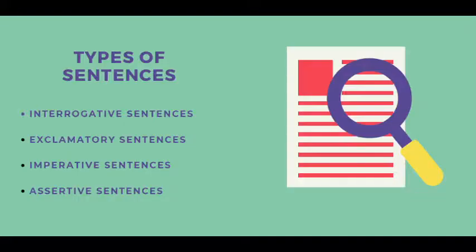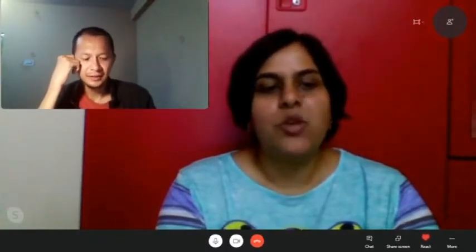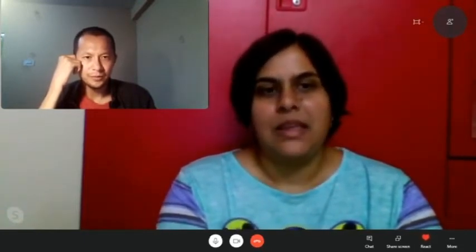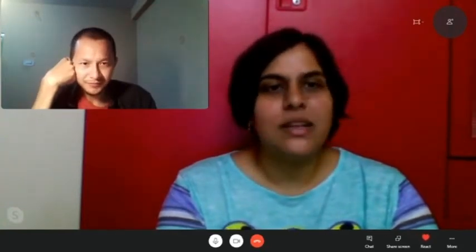Sentences are of four or five main types depending on who is teaching your grammar. We'll start with interrogative sentences, which are basically questions — the easiest thing to identify, kyonki end mein ek question mark hai. Exclamatory sentences are expressions of emotion. For example, 'This is fantastic!' — at the end we put an exclamation mark, the one on your keyboard above the number one. These two are the easy ones.